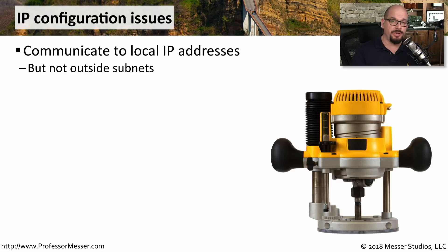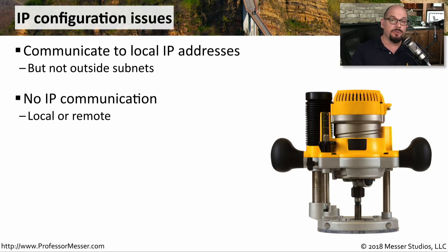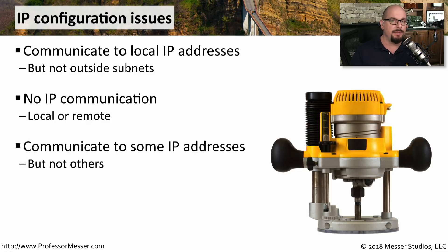If the IP configuration on your device is not correct, you may see a number of different symptoms. One might be that you can communicate to local IP addresses but you're not able to communicate to IP addresses on a different subnet. Or you may find there's no IP communication at all — you can't communicate to devices on your local subnet or a remote subnet. Or you may find that some IP addresses on your local subnet are accessible, but others are not.